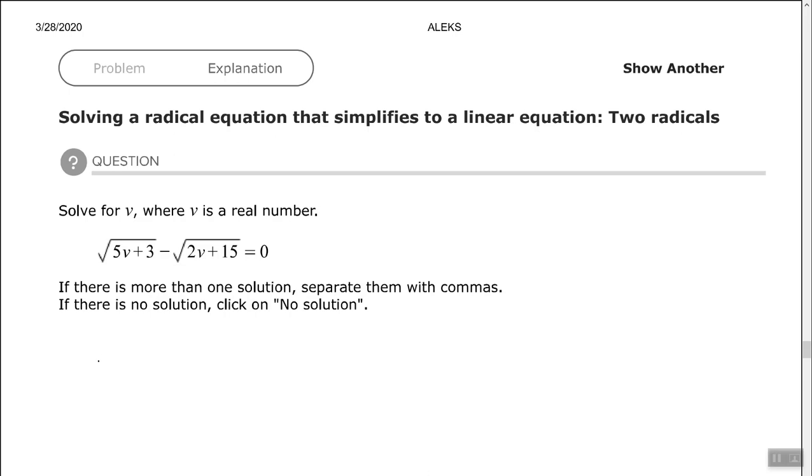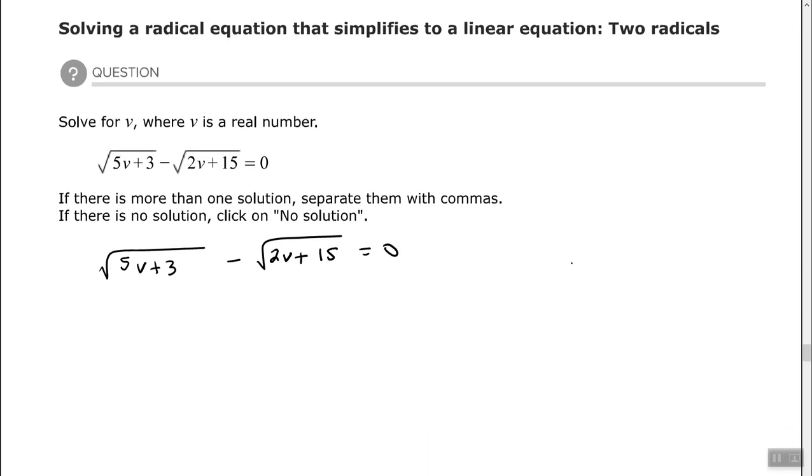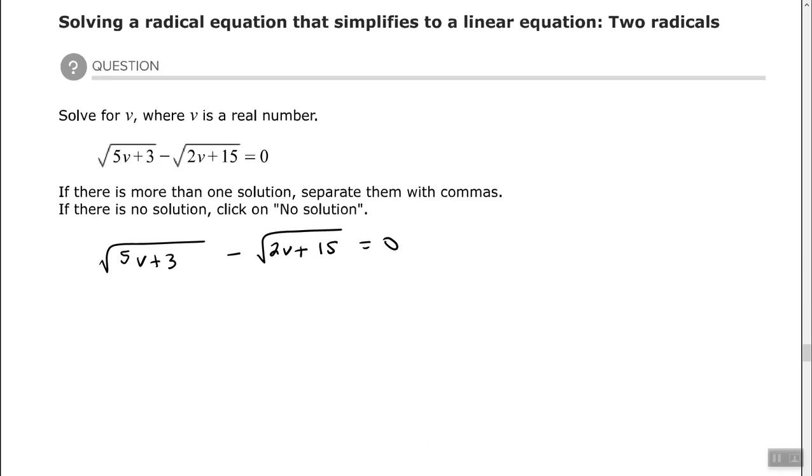So start off with the square root of 5v plus 3 minus the square root of 2v plus 15 equals 0. To move a radical, I'm going to move the one that's being subtracted using the addition property of equality. I'll add this square root to both sides of the equation, just like adding a number to both sides.